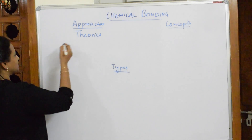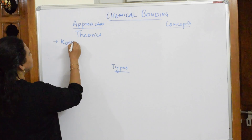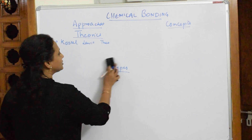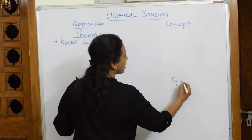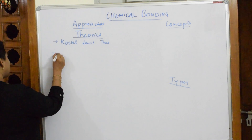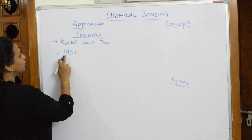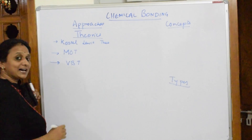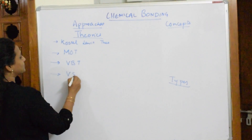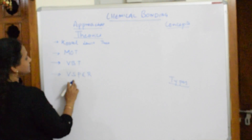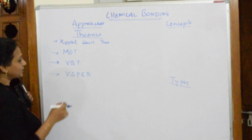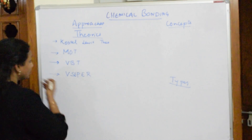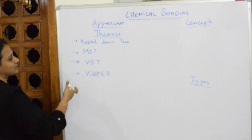Under theories or approaches, in your syllabus you are going to learn about the Kossel-Lewis theory, also called the Kossel-Lewis approach. You will also study MOT — Molecular Orbital Theory — and VBT — Valence Bond Theory. You'll also be studying VSEPR — Valence Shell Electron Pair Repulsion Theory.